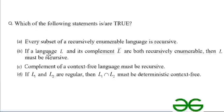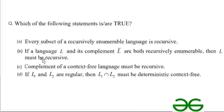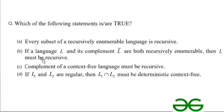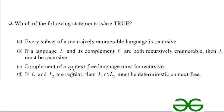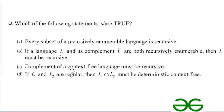Now statement two: if language L and its complement L' are both recursively enumerable, then L must be recursive. This is a standard theorem — if L and L' are both recursively enumerable then L must be recursive. So option B is correct. Option C: the complement of a context free language must be recursive. The complement of a CFL is a CSL, and every context sensitive language is recursive, so option C is also true.